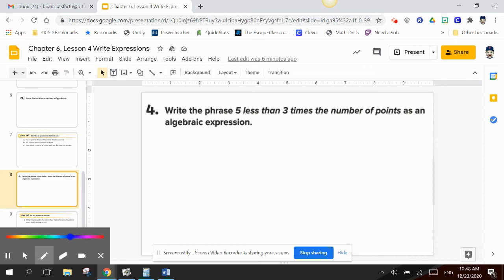Sometimes we have more than one step of an expression to do. Such as write the phrase five less than three times the number of points as an algebraic expression. So again, we read through it. Five less than three times the number of points. So how many points did we have? That's going to be our variable. So I work backwards. Number of points times. Times tells me to multiply. Multiply that by three. Less than. Less than tells me I have to subtract. And what am I going to subtract? That five.